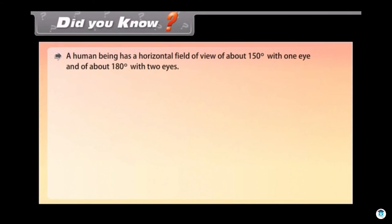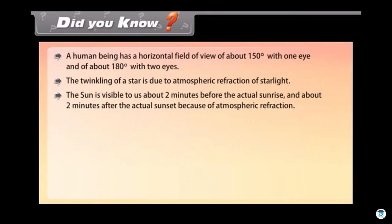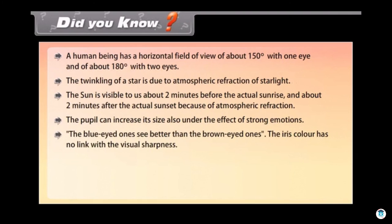A human being has a horizontal field of view of about 150 degrees with one eye and of about 180 degrees with two eyes. The twinkling of a star is due to atmospheric refraction of starlight. The sun is visible to us about two minutes before the actual sunrise and about two minutes after the actual sunset because of atmospheric refraction. The pupil can increase its size also under the effect of strong emotions. The blue eyed ones see better than the brown eyed ones. The iris color has no link with the visual sharpness.